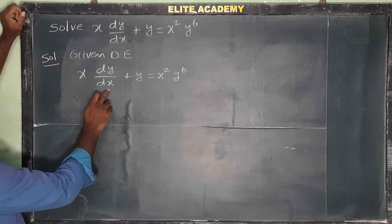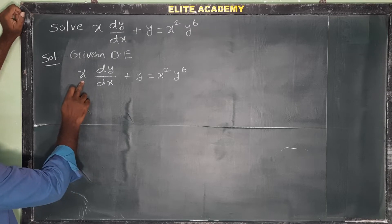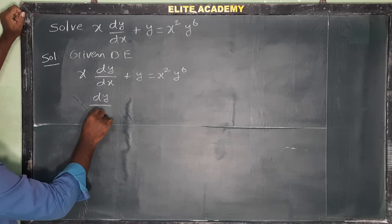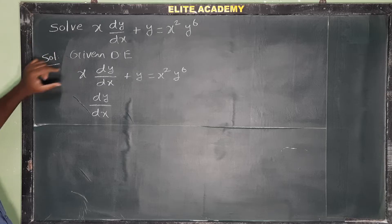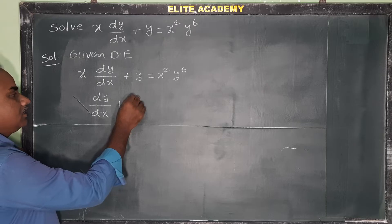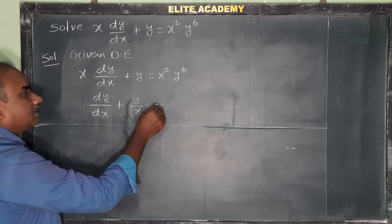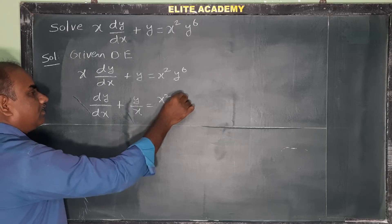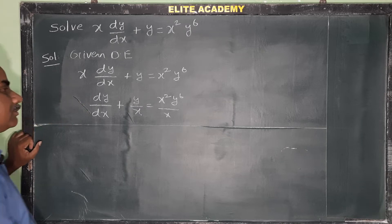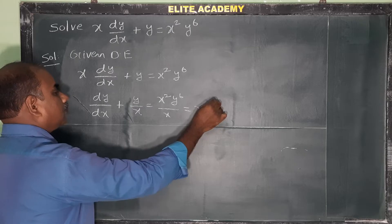We need to get dy/dx in a standard form. To do that, divide the entire equation with x. So we get dy/dx + y/x = x² y⁶ / x, which simplifies to dy/dx + y/x = x y⁶.